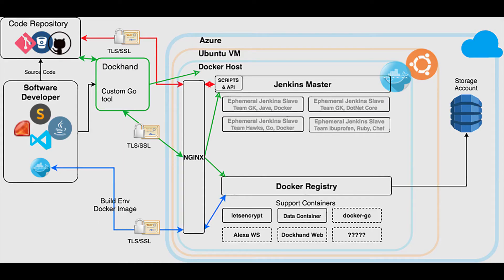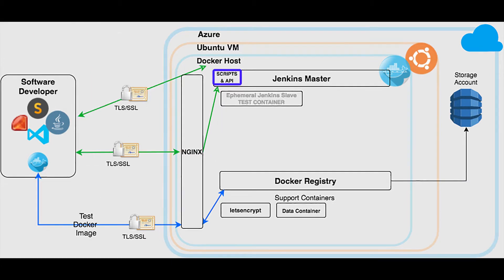Welcome to part 4 of my series where we are creating an automated build system with Docker and Jenkins in Azure. In this installment we will be adding two scripts to Jenkins to extend its out-of-the-box API functionality. One of the major outcomes from this project is to allow dev teams to create their own build environments and build pipelines. The actual build job and pipeline creation is fairly straightforward to automate using the out-of-the-box Jenkins REST API.